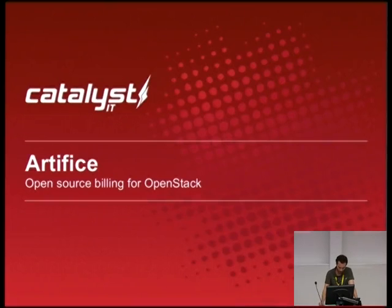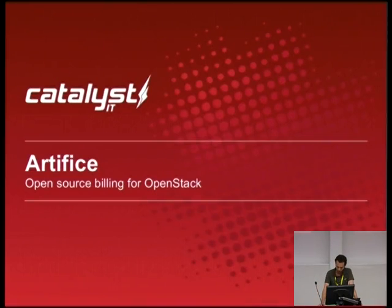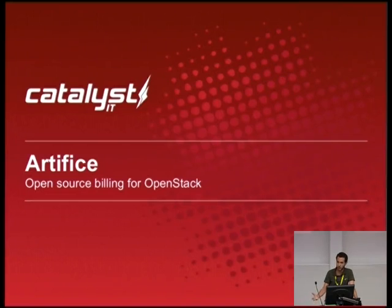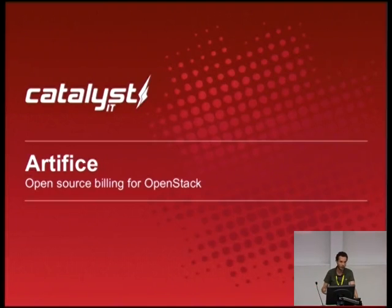I'm here today to talk about Artifice. Besides helping customers to deploy OpenStack clouds, Catalyst is also running its own OpenStack cloud, and of course we need to build clients for what they use. I believe most people running OpenStack are pretty much in the same situation — they either need to charge customers for what they are consuming, or they need to split the running costs of OpenStack internally across different departments.